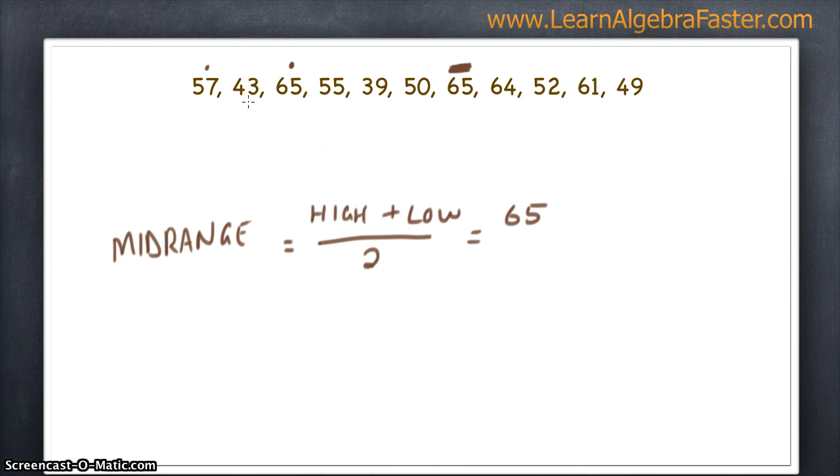Now let's find our lowest number. 43 is lower than 57. 39 is even lower. And it looks like 39 is our lowest number.